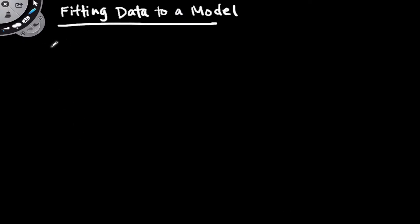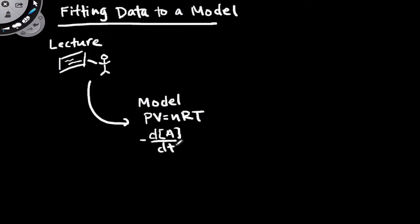If we think about what goes on on the lecture side, you're introduced in the classroom to a variety of chemical concepts. These concepts are conveyed as chemical models, models of chemical theory, and we often represent these as equations. For example, PV equals nRT or a rate law, the negative rate of change of the concentration of a reactant is proportional to that concentration.